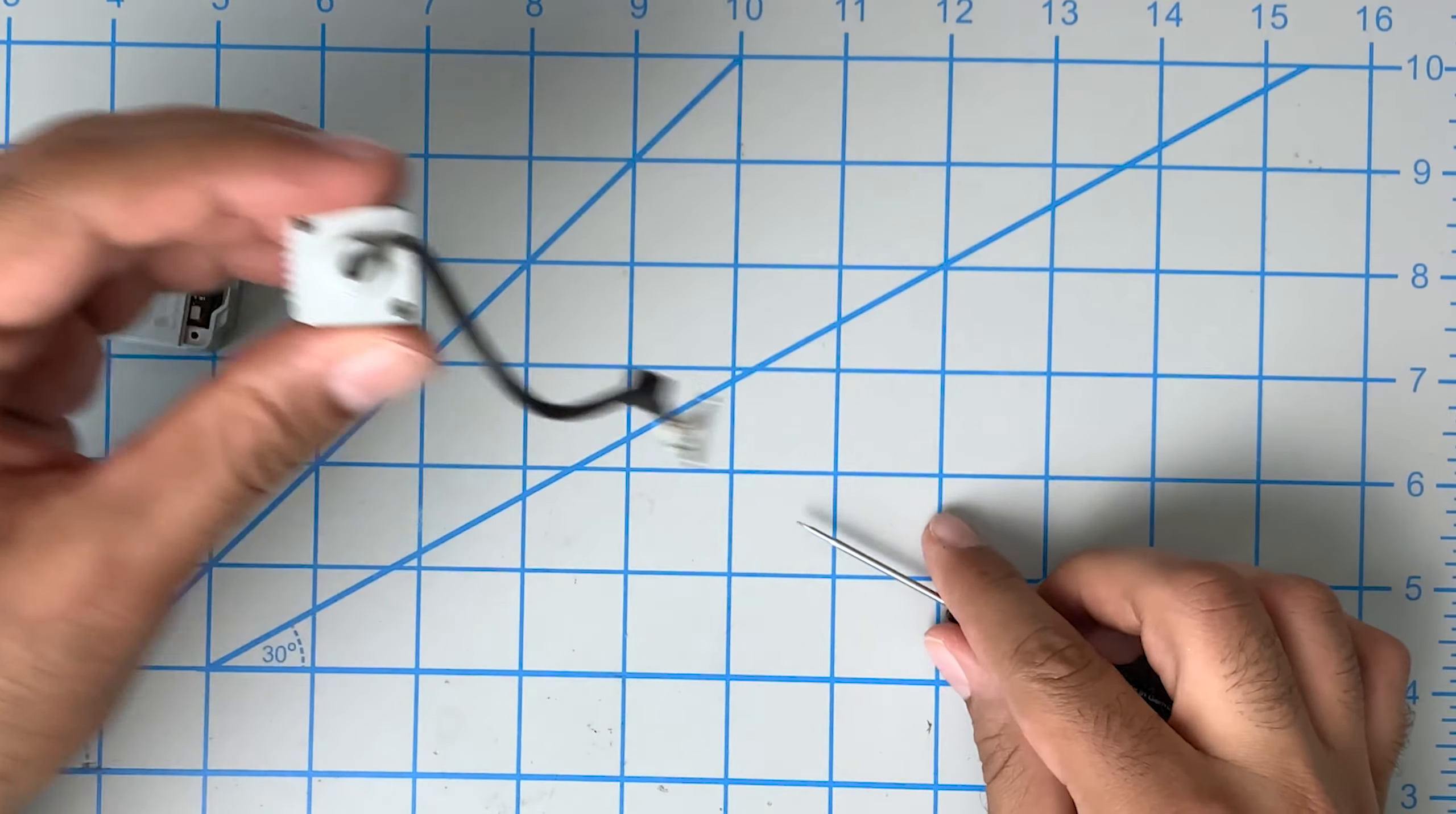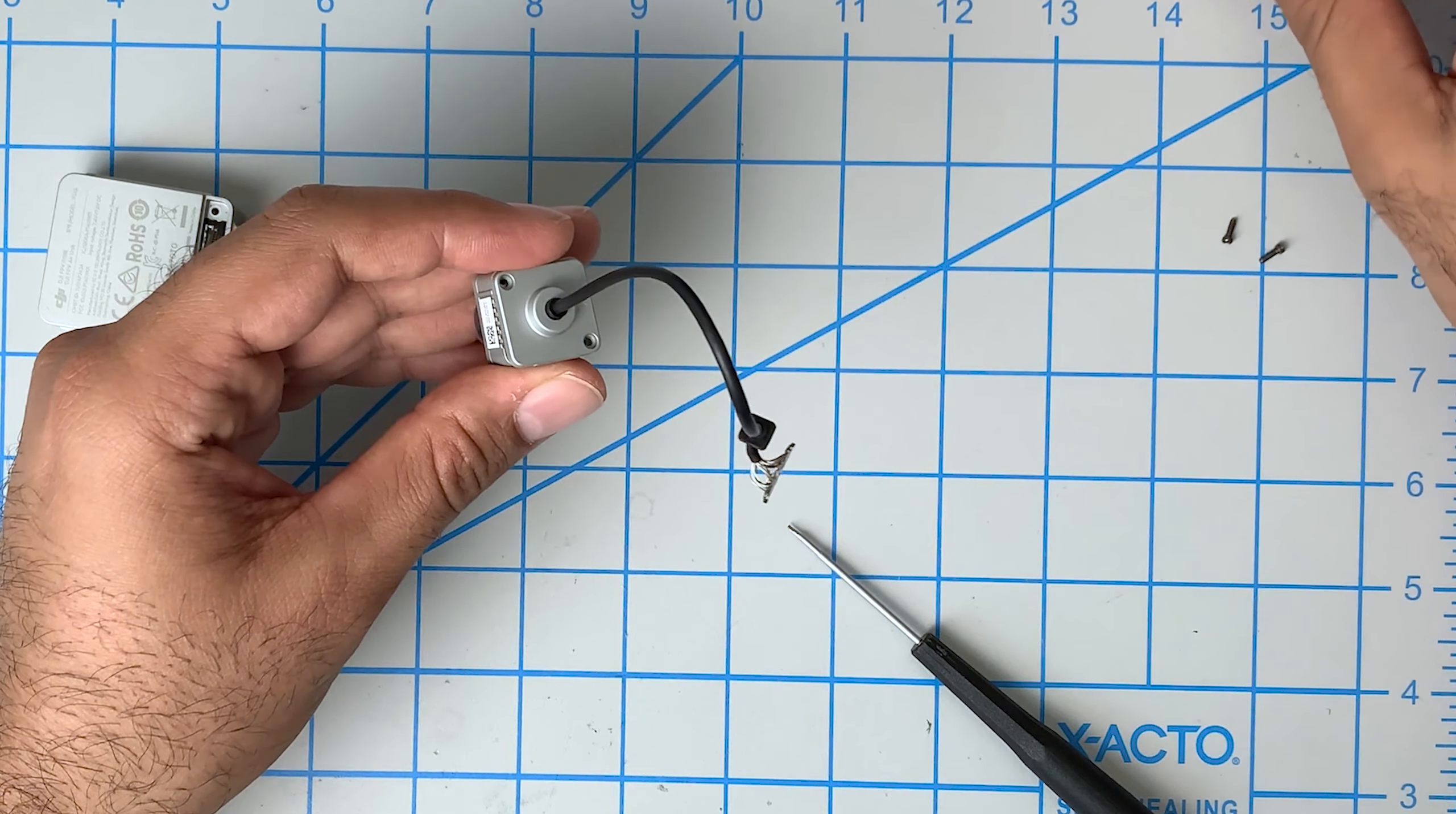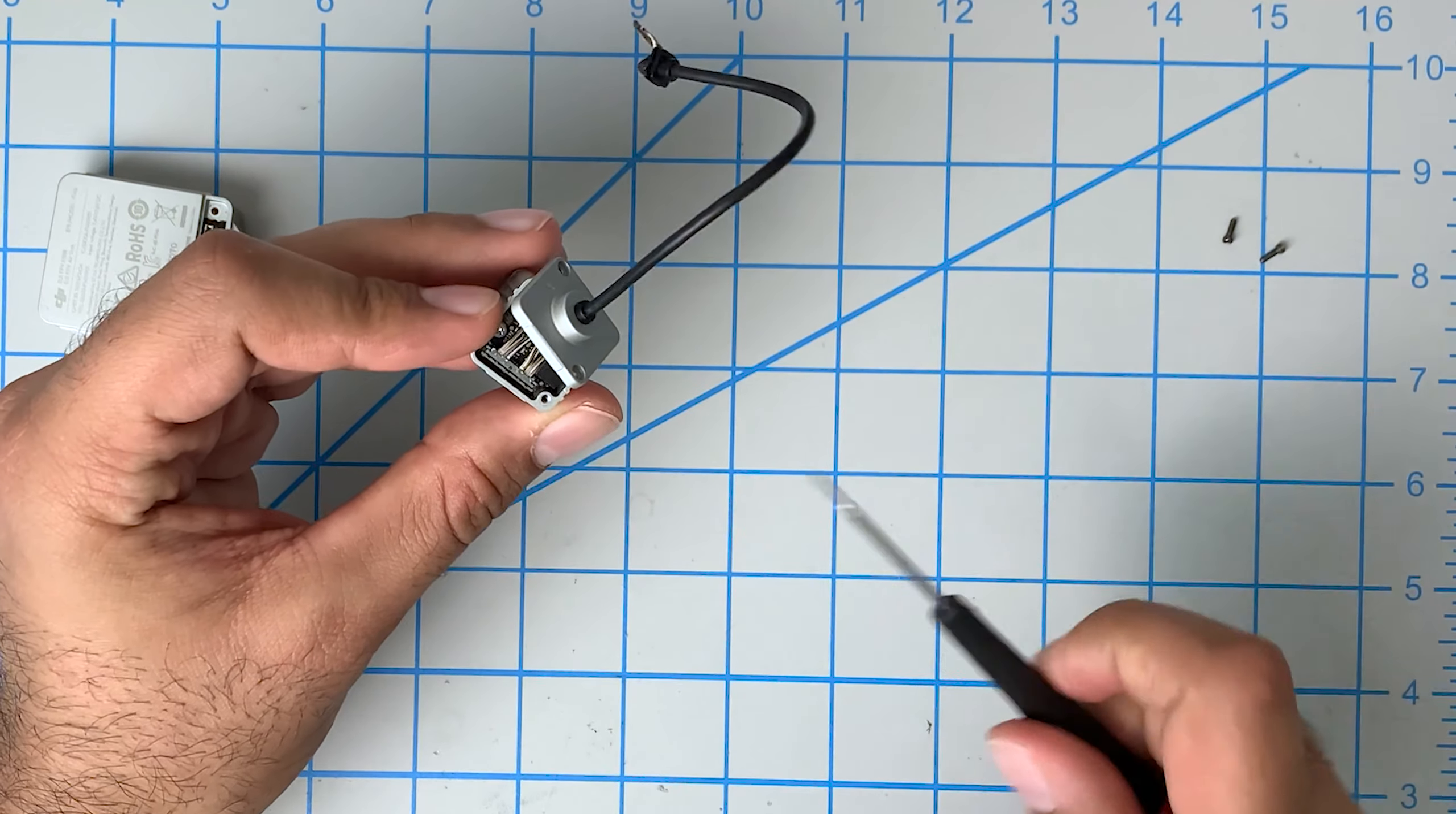Now we'll continue on the other side. We're going to remove these two screws on the back of the camera. And very slowly you want to pull this out. And we have the same kind of connector on this side.